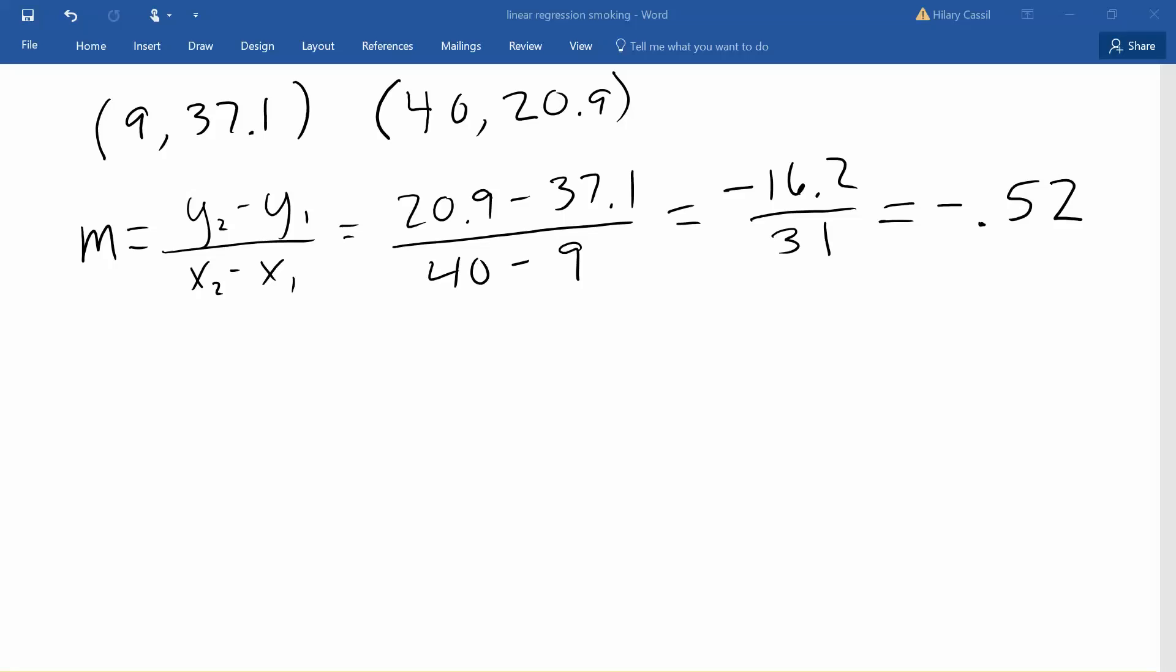We can either use the point slope form of a line or the slope intercept form of a line, which I prefer, so we'll go ahead and do that. So replacing m in y equals mx plus b with our negative 0.52, we get this equation. We can replace the x and y with either of the two points that we used to find b.